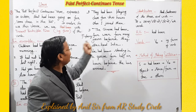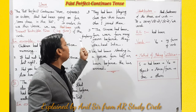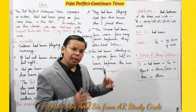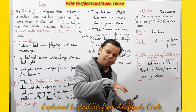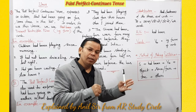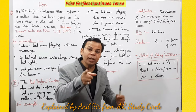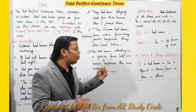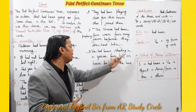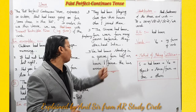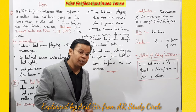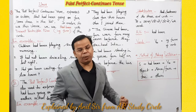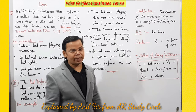Second example: 'The Chinese had been preparing for war for many years before they attacked India.' — India par akraman karne se pehle Chinese kai varson se yudh ki taiyari kar rahe the. Third example: 'We had been standing in a queue for half an hour before the bus arrived.' — Bus ke aane se pehle hum aadhe ghante se line mein khade the.